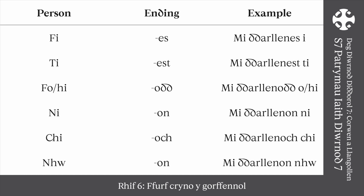Past tense verb conjugation: Fi — es — Mi ddarllenais i. Ti — est — Mi ddarllenest ti. Fo — odd — Mi ddarllenodd o. Hi — odd — Mi ddarllenodd hi. Ni — on — Mi ddarllenon ni. Chi — och — Mi ddarllenoch chi. Nhw — on — Mi ddarllenon nhw.